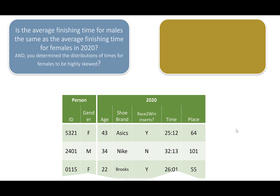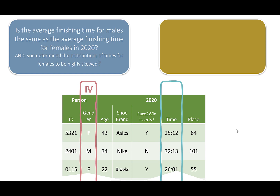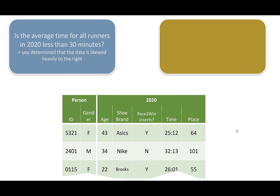Same first question: is the average finishing time for males the same as females in 2020? But now let's say you've determined that the distribution of times for females is highly skewed — so a parametric independent samples t-test is not appropriate. The equivalent non-parametric test is a Mann-Whitney test. Same independent and dependent variables as before; it's just that our dependent variable's distribution led us to run a Mann-Whitney non-parametric test. The only change is the type of dependent variable you have.